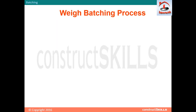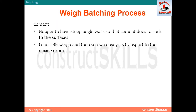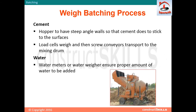In the weight batching process, cement hoppers have steep angle walls so that cement does not stick to the surfaces. Load cells weigh the cement and then screw conveyors transport it to the mixing drum. For water, water meters or water weighers ensure the proper amount of water to be added.